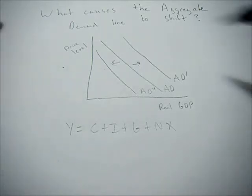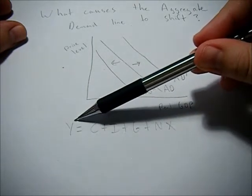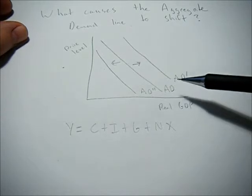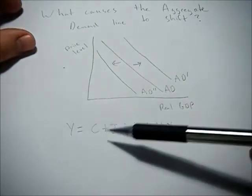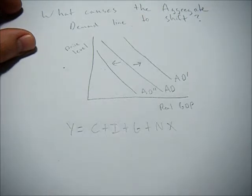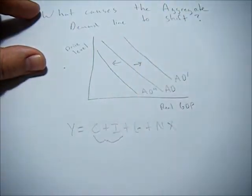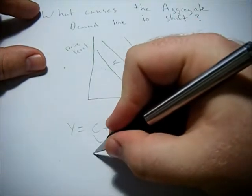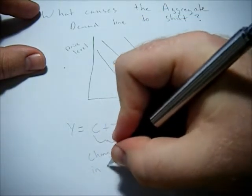If any of these things change, we're going to have a change in Y, and therefore a change in aggregate demand. So what causes aggregate demand to shift? It's a change in one of these variables. For C and I, I'm going to lump these two together, and this would be caused by a change in expectations.